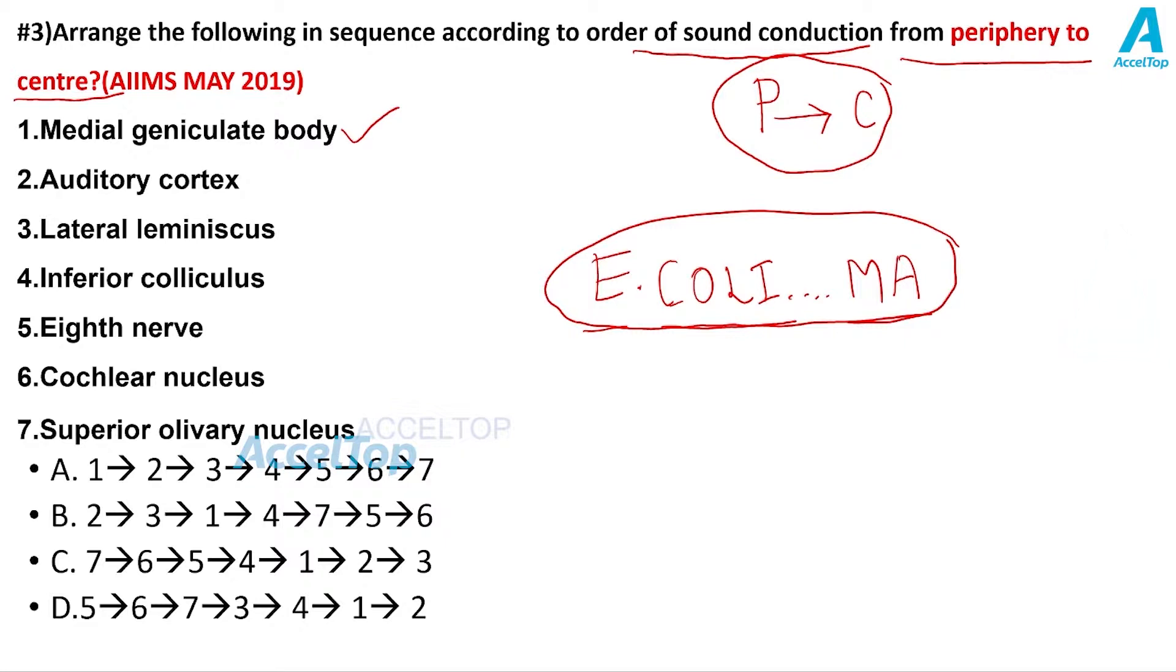What is E stands for? Eighth nerve. E for eighth nerve. What is C? Cochlear nucleus. What is O? O in the mnemonic stands for olivary nucleus, that is superior olivary nucleus. What is L? Lateral lemniscus. What is I? Inferior colliculus. What is M? Medial geniculate body. And what is the A? Auditory cortex.